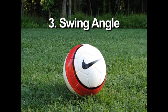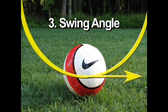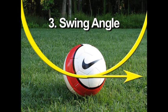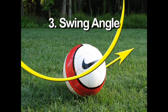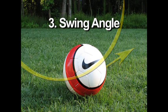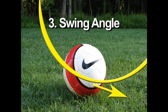Number three: swing angle. If the ball is struck in the center of the swing circle, the swing angle will be neutral or flat and the ball will go straight. If we catch the ball on an upward swing angle, the ball will follow this path and travel upward. If the ball is struck on a downward swing angle, the ball will follow and travel downward.